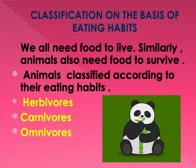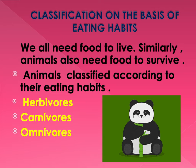Now let us learn classification on the basis of eating habits. We all need food to live; similarly, animals also need food to survive. Animals are classified according to their eating habits. The first one is herbivores, next is carnivores, and the third category is omnivores.